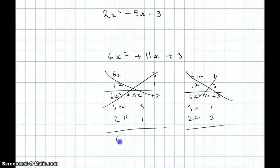6x squared for the first one, 3. 3x plus 6x is 9x. So, we got it.